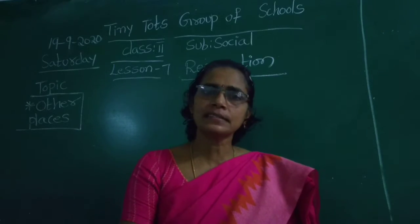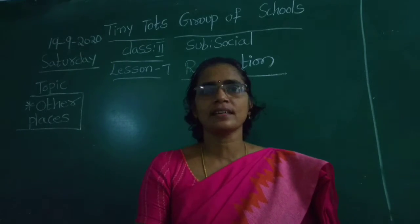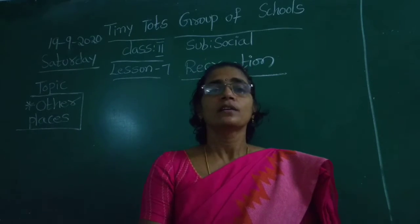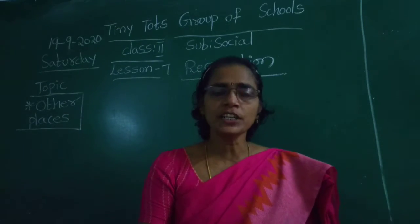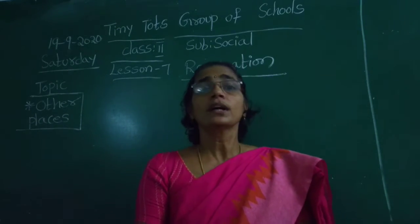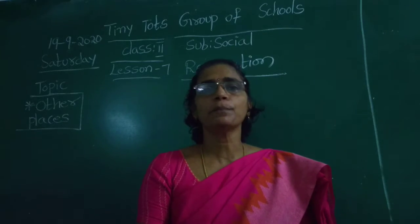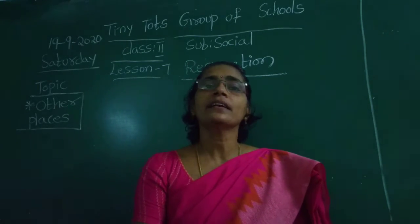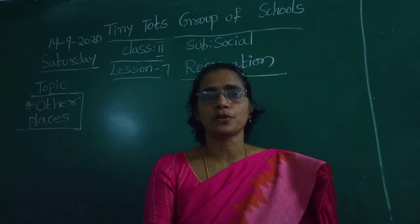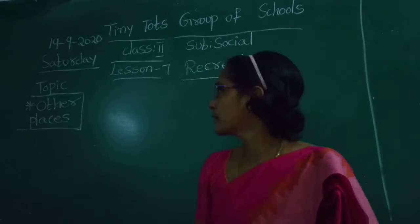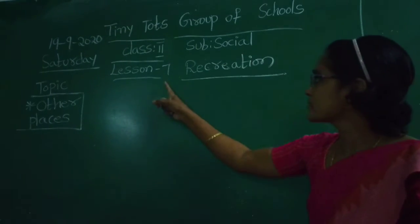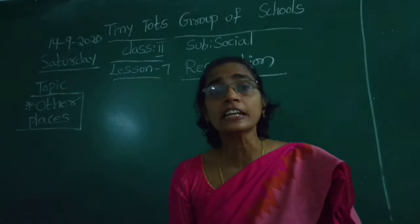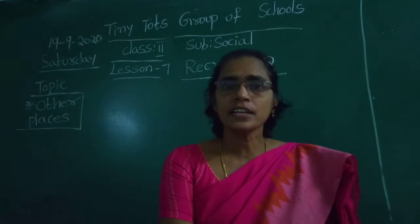We have already completed 6 lessons about yourself, your family, clothes you wear, food you eat, houses you live in, the different people who help you, and about your neighbors and neighborhood. Now we are in lesson number 7: Recreation.